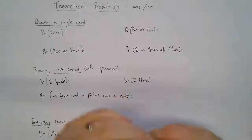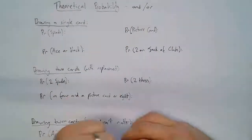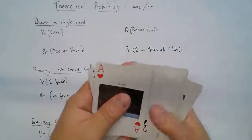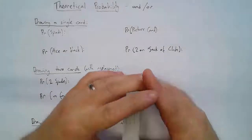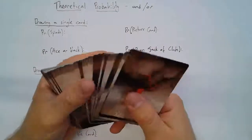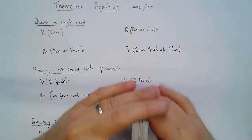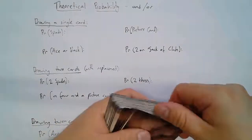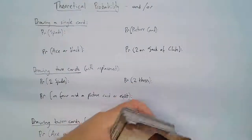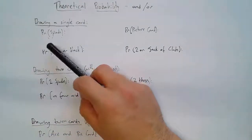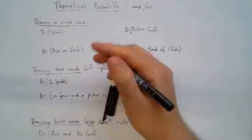We're going to look at theoretical probability, specifically AND and OR. We're going to be looking at cards — assuming 52 cards, 13 in each suit, so four suits. Let's look at drawing a single card out of the deck. What is the probability of that being a spade? How many spades are there?